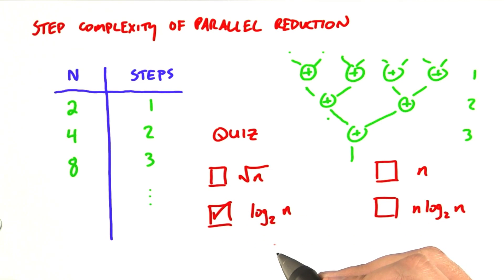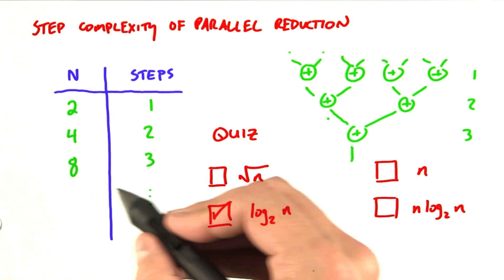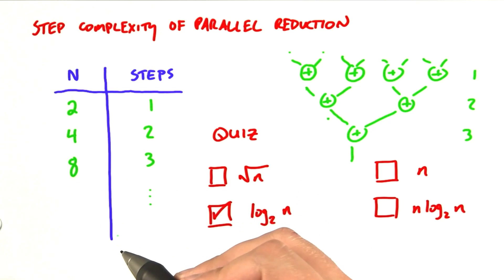And the answer is log base 2 of n. Note that 2 to the power of the number of steps equals the number of elements. We would say that the step complexity of this parallel algorithm is O of log n.